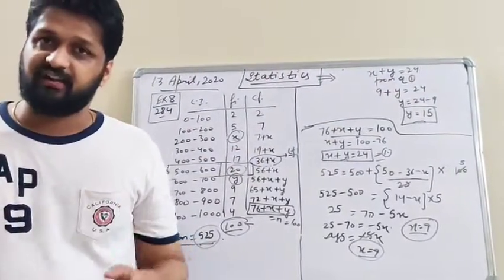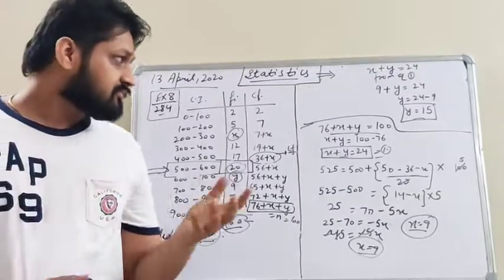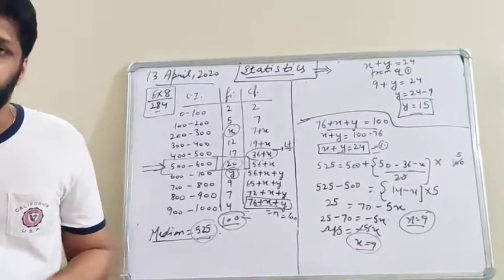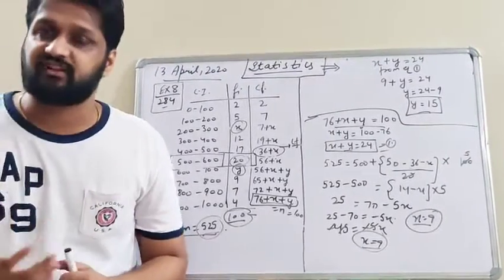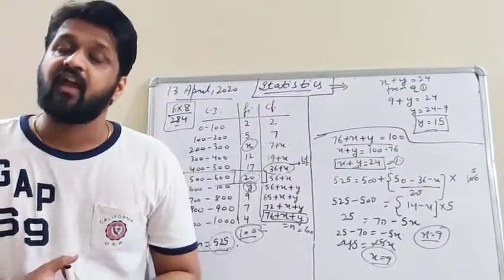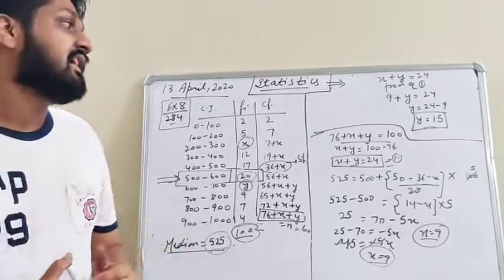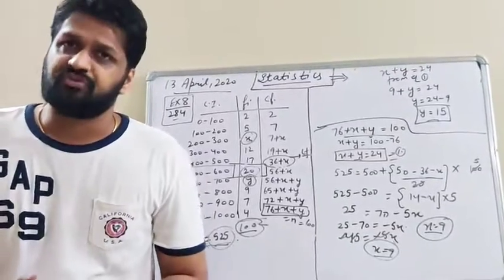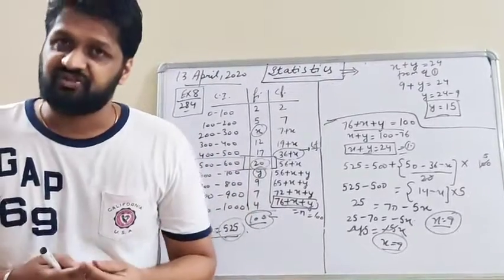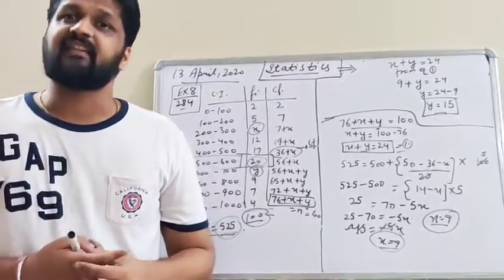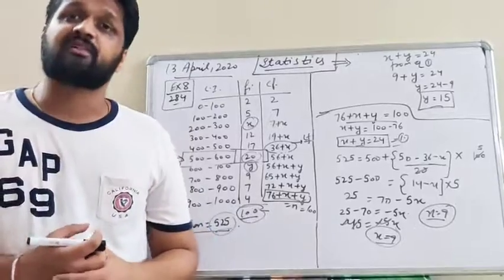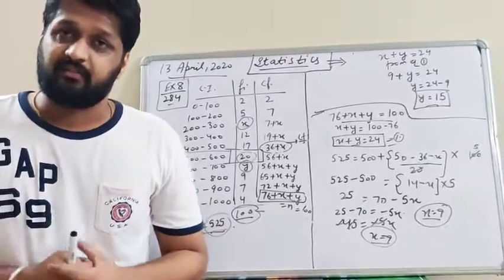This is a very important question and a very important example. In this video we discussed only this much, and in the next video we will discuss more about statistics — specifically more-than type questions. A new type of question will also come: less-than ogive and more-than ogive, which can be done graphically. This type of question has appeared in previous 2 or 3 board exams, so you must practice those as well. Till then, practice questions based on mean, mode, and median.